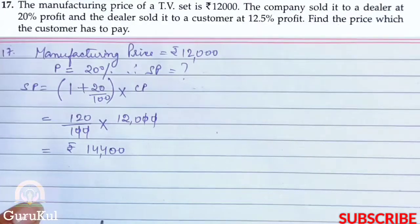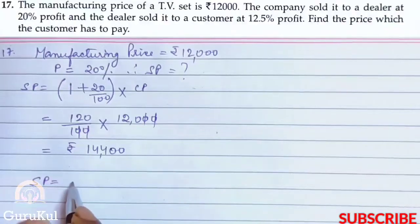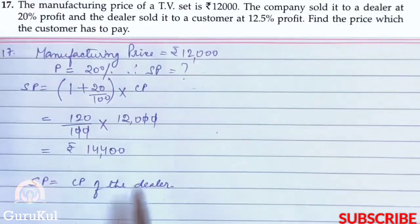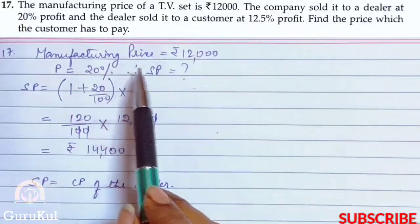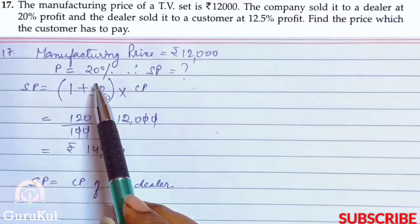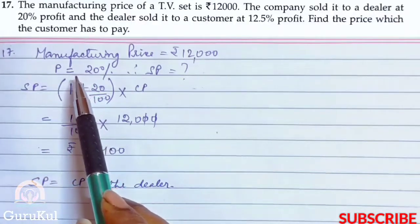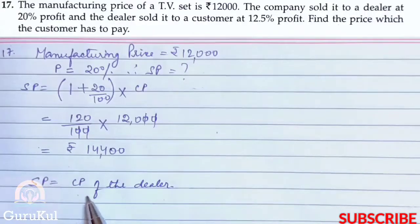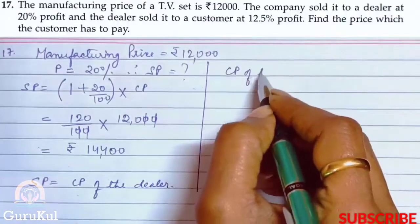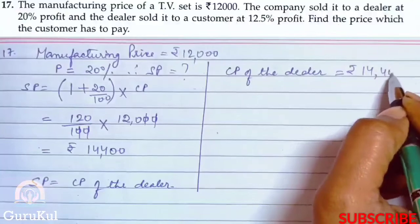The dealer then sold it to the customer at 12.5% profit. The SP of the manufacturing center becomes the CP of the dealer. So CP of the dealer is equal to Rs. 14,400.